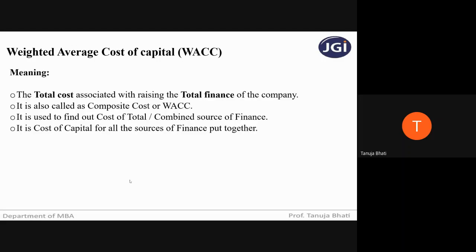Let us understand the meaning. The weighted average cost of capital is the total cost associated with raising the total finance of the company. Weighted average is nothing but where you are going to find out the total cost, not individual. When you combine all the individual sources, it becomes total. It is also called as composite cost or WACC.